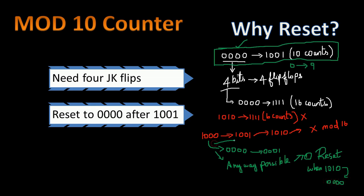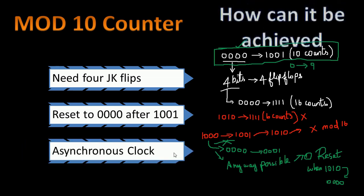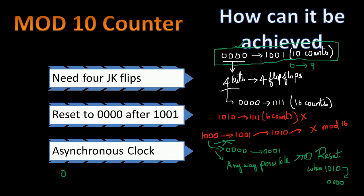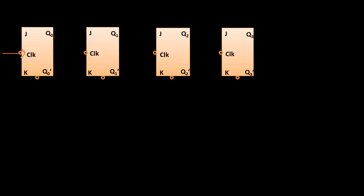Our counter is an asynchronous counter, also called a ripple counter. The clock input of the first flip-flop is connected to an external clock source, and every other flip-flop takes its clock input from the previous flip-flop's output, thereby creating a ripple effect. Looking at the truth table, the counter starts from 0 and goes up to 9, and instead of reaching 10 it resets back to 0.